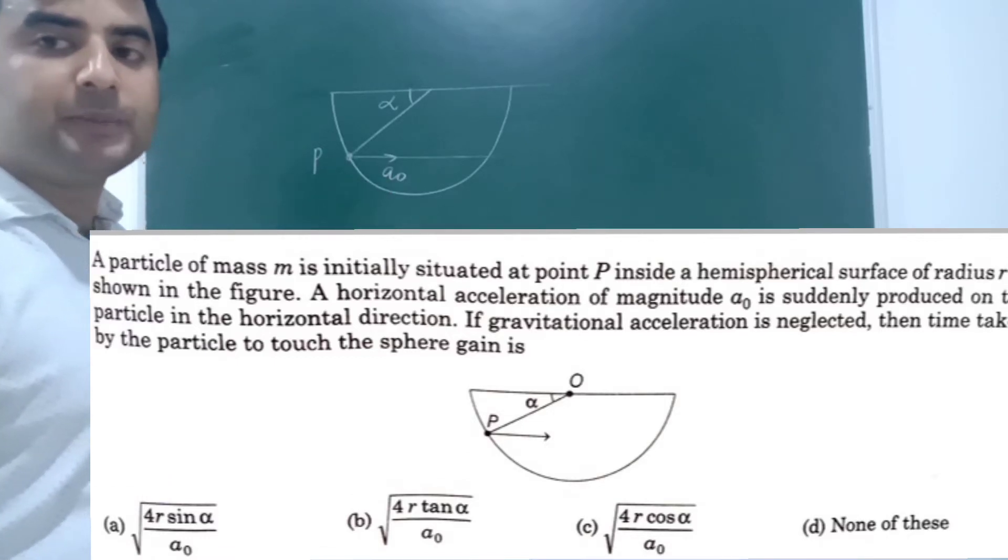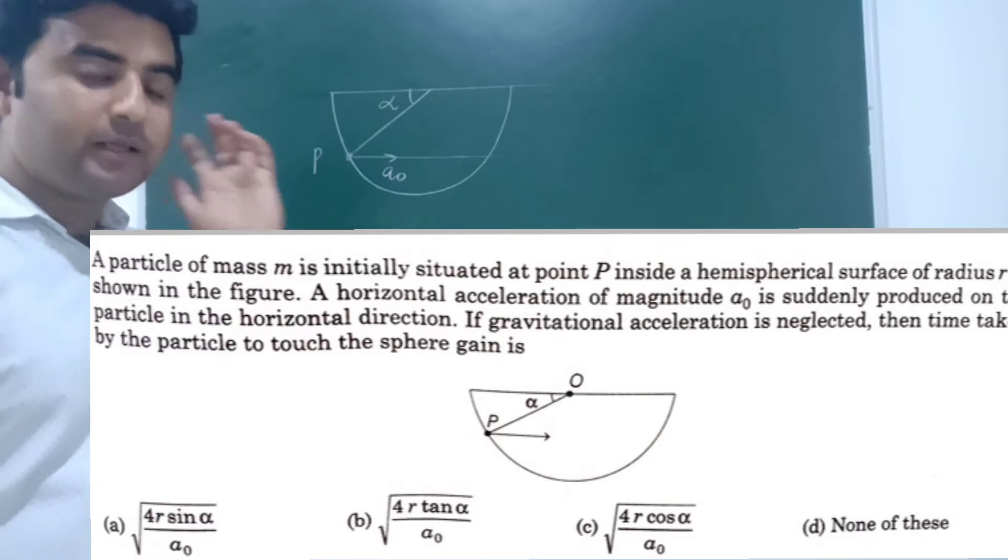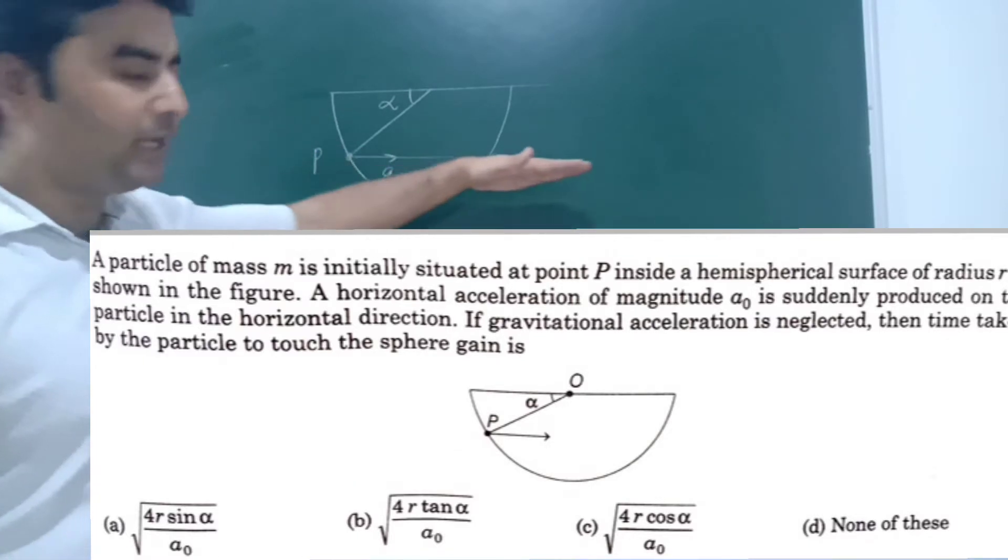The particle is initially situated here. It means it is at rest and acceleration is A0 in horizontal direction. There is no gravitational acceleration, so the particle will move in a straight line.